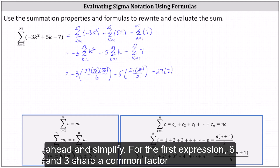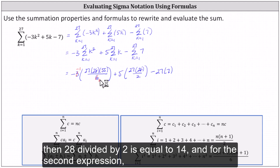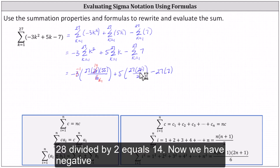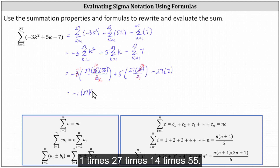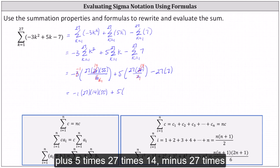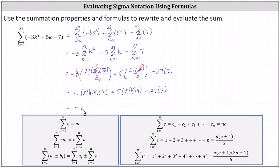Now let's simplify. For the first expression, six and three share a common factor of three: negative three simplifies to negative one, and six simplifies to two. Then 28 divided by two equals 14. For the second expression, 28 divided by two equals 14. We now have negative one times 27 times 14 times 55, plus five times 27 times 14, minus 27 times seven, which equals negative 19,089.